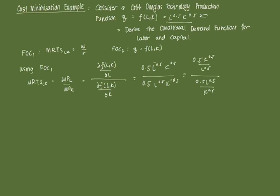Then simplifying it you get 0.5 K to the 0.5 times K to the 0.5 all over 0.5 L to the 0.5, and you're going to get that MRTS LK is equal to K over L, because this will cancel out - 0.5 plus 0.5, that's just 1. You get K over L. Therefore using that condition it should be that K over L is equal to W over R.